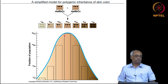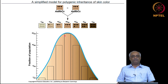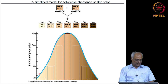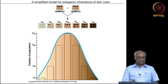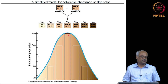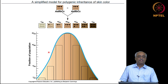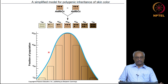If you measure the height of all individuals in a group and plot it, the graph will look like the one seen in this slide. Extremely short or extremely tall individuals will be fewer in the population, and the majority will be somewhere in between. There will be an average where the number is maximum, so it gives you a bell-shaped curve. That is because of multiple genes each having different alleles, and what combination comes together determines the phenotypic outcome.